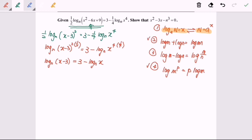Now I'm going to apply rule number 2. It will be log base n x minus 3 plus log base n x equals 3. I'm applying rule number 2, so log base n x minus 3 plus log base n x can be combined.